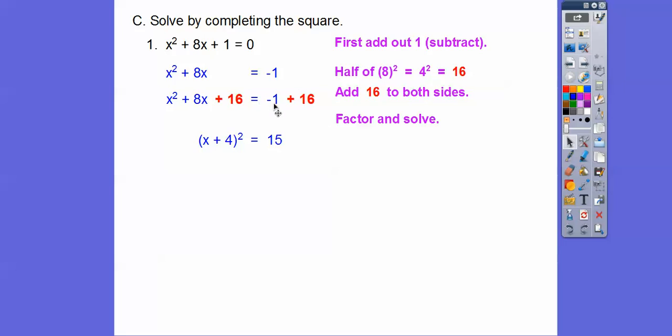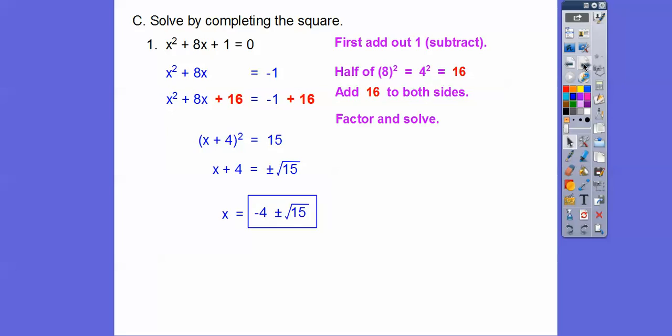So then that equals over here we get negative 1 plus 16 is 15 and now we square root both sides. Don't forget your plus or minus. Subtract 4 and there you go.